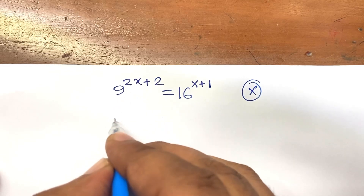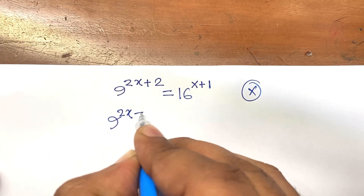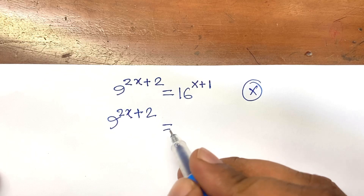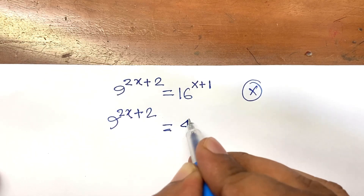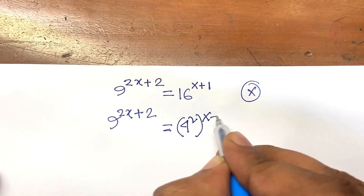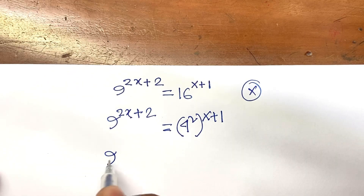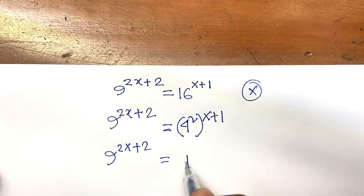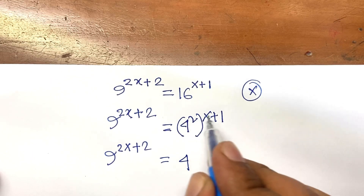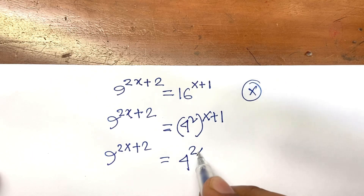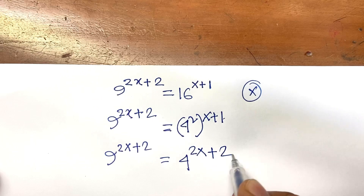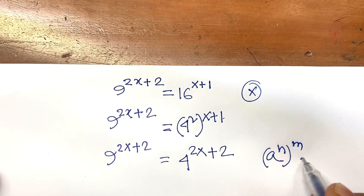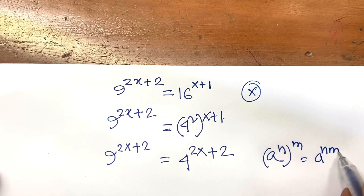Here is 9 to the power of 2x plus 2, and here is 16. We know that 16 is the same as 4 squared, so 16 to the power of x plus 1 equals 4 squared, to the power of x plus 1, which gives 4 to the power of 2x plus 2. We use the rule: a to the power n bracket m equals a to the power n times m.